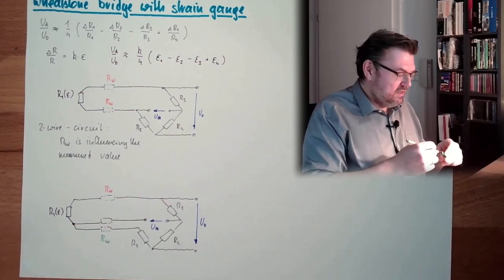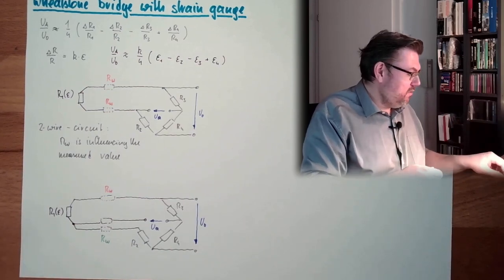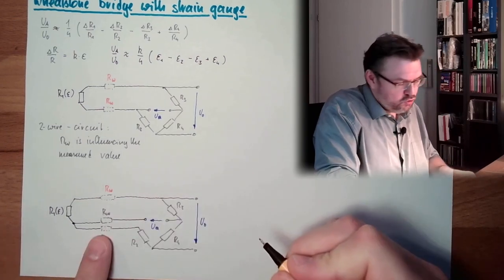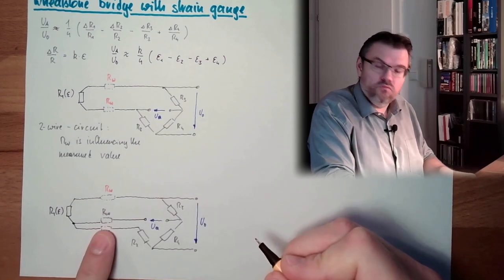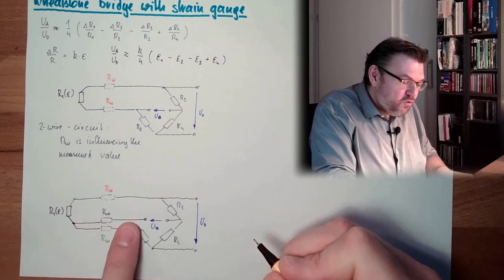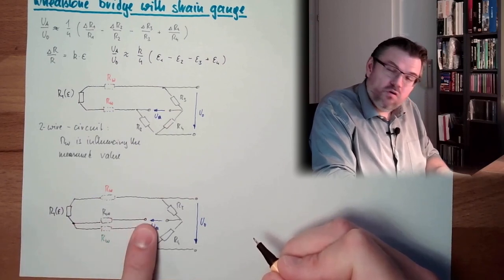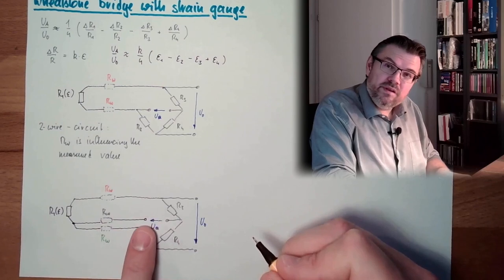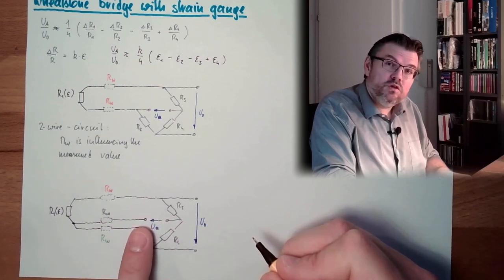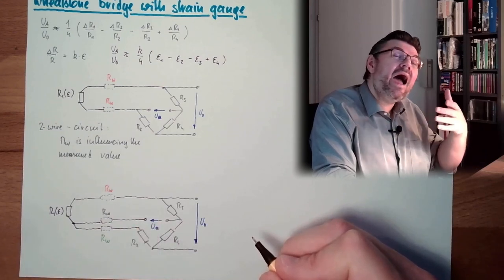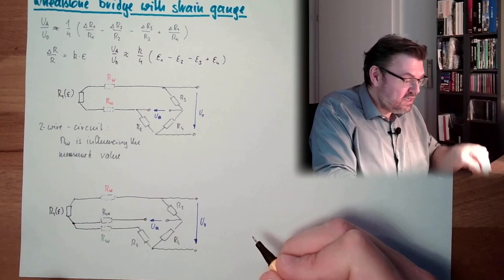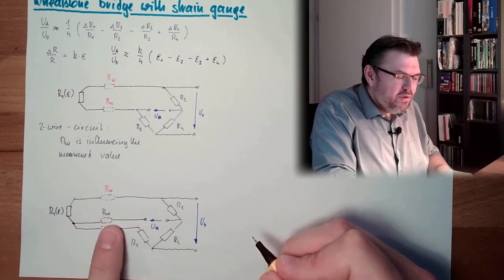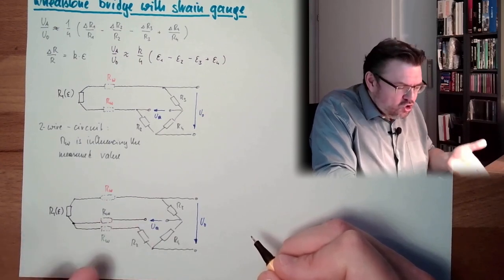Why is this Rw not really influencing the measurement? Because there is almost no current — here there is a voltage measuring device with very high input resistance, so there is almost no current running and no voltage drop.